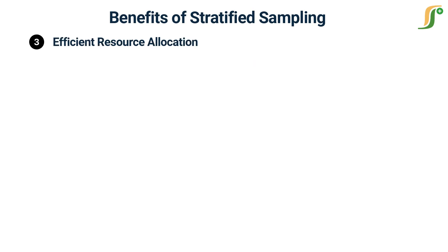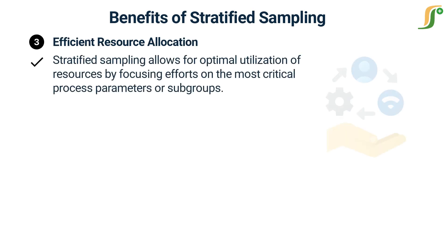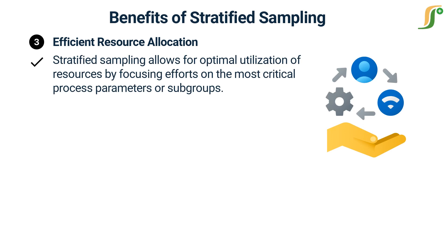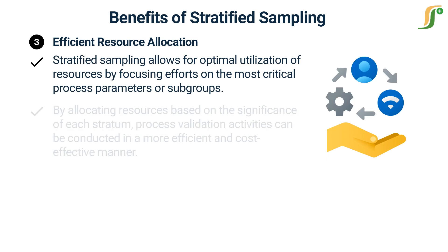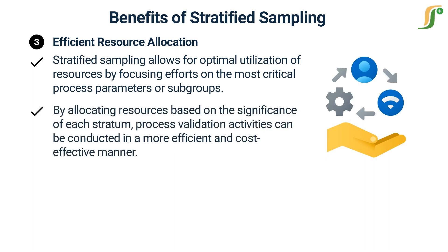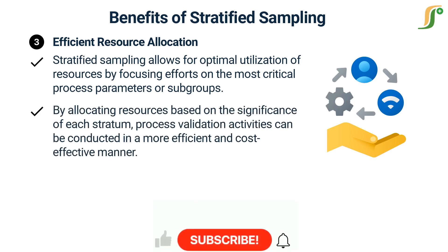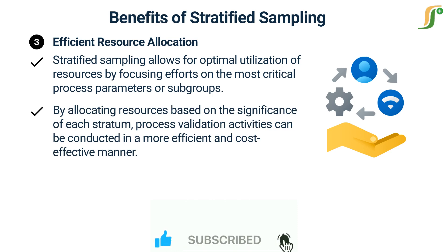Third, efficient resource allocation: stratified sampling allows for optimal utilization of resources by focusing efforts on the most critical process parameters or subgroups. By allocating resources based on the significance of each stratum, process validation activities can be conducted in a more efficient and cost-effective manner.